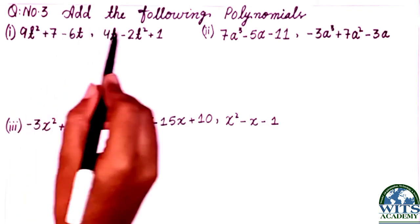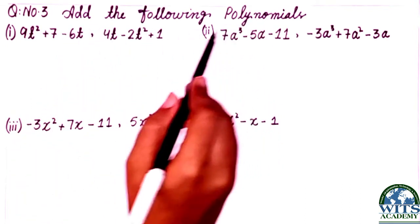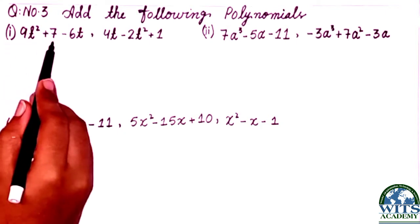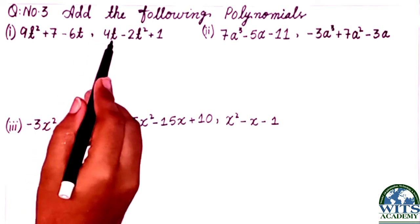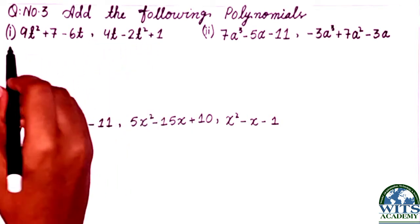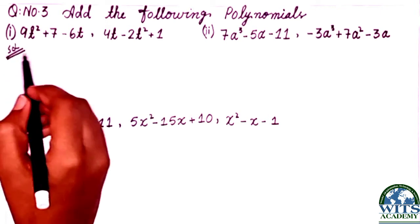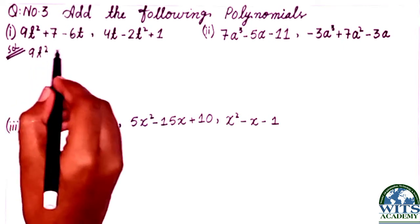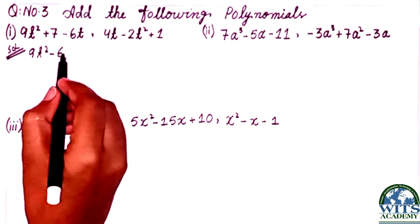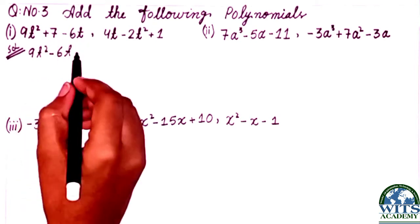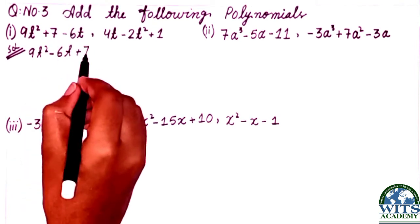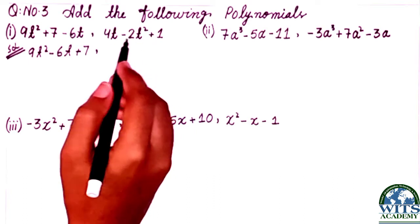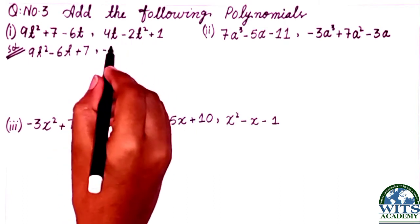We will explain question number three: add the following polynomials. Point number one is 9t squared plus 7 minus 6t, comma 4t minus 2t squared plus 1. Students, first we will arrange and write in ascending order. We will write 9t squared then minus 6t plus 7.